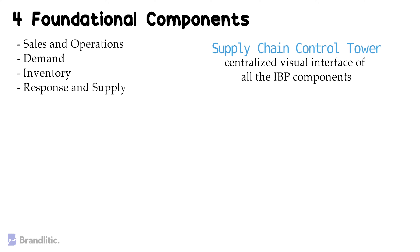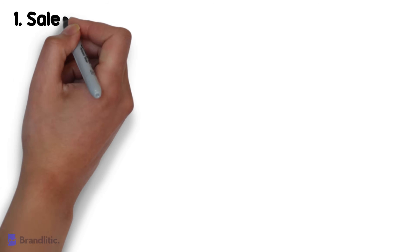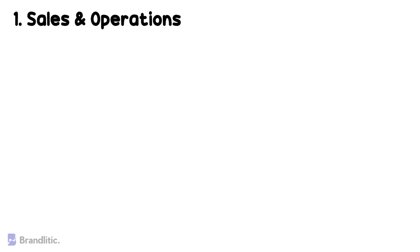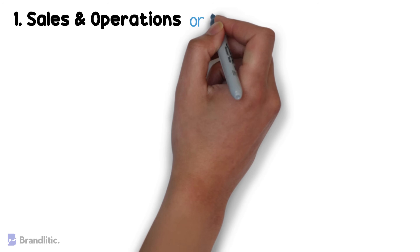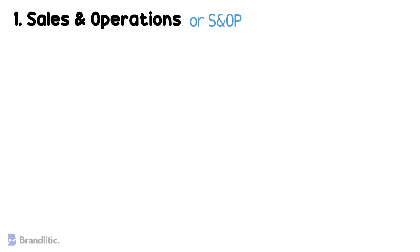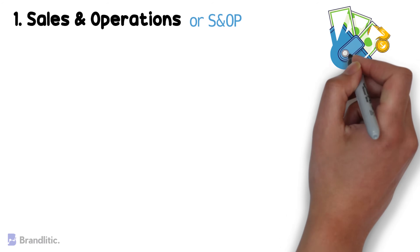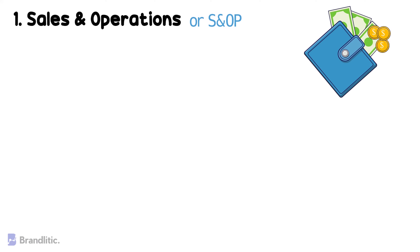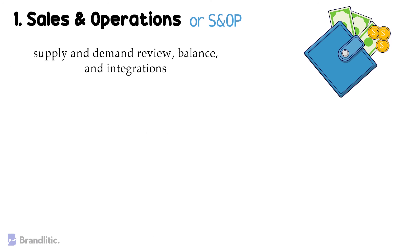The first component is Sales and Operations. SAP IBP for sales and operations, or S&OP, is the heart of this module. It allows for seamless integration of sales and operations planning in a business, and typically includes the steps of supply and demand review, balance, and integrations.